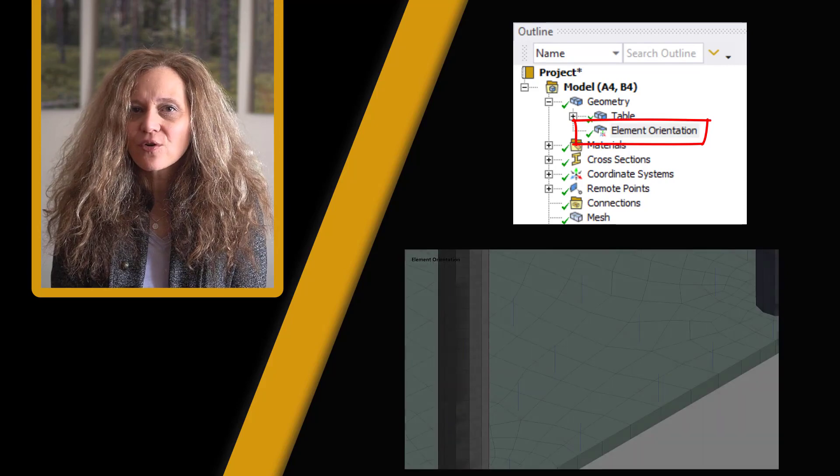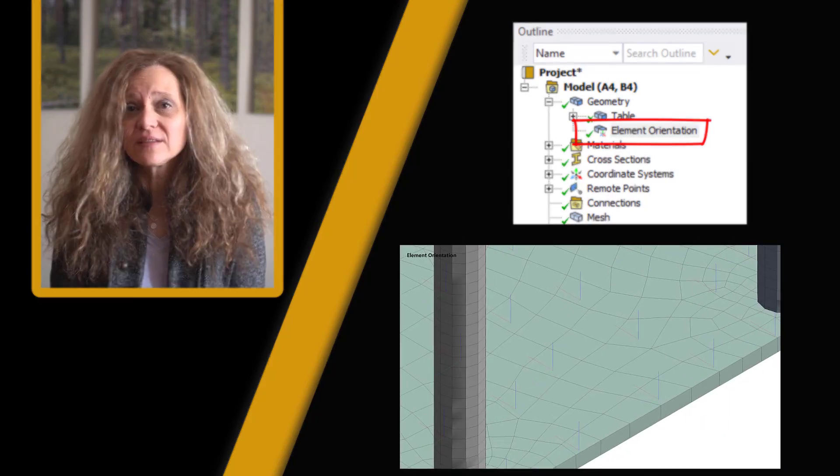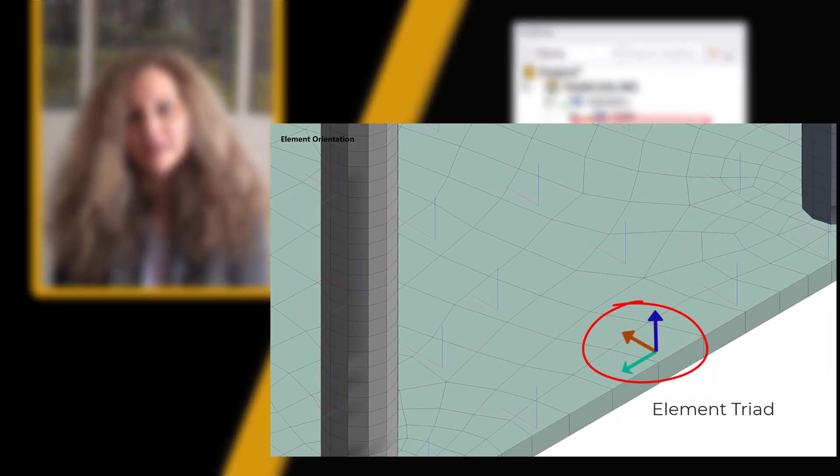Alternatively, one can use the element orientation feature under geometry to properly orient the element coordinate system and in this case the directions will be consistently aligned and average results can still be utilized.